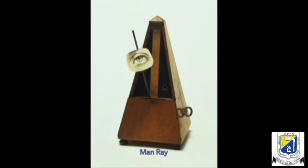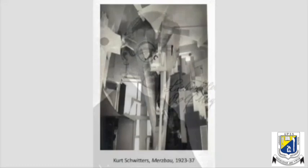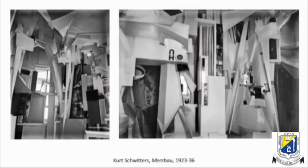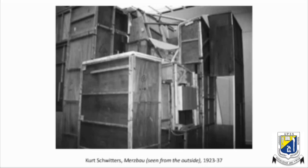Eventually, a German artist named Kurt Schwitters decided that there should be no separation between life and art, and so he built a house where the house itself was a work of art. He called this house Merzbau. Everything in Merzbau was part of the artwork.